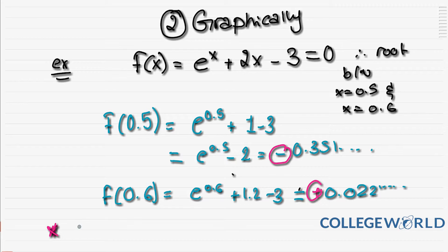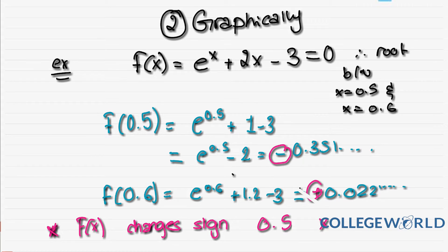Now what you do next is you see this is negative and this is positive. So what you state here, and this is your answer: you're going to say that f(x) changes sign between 0.5 and 0.6, thus there is a root that exists between them.